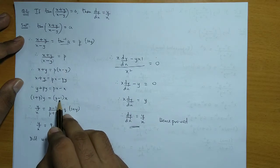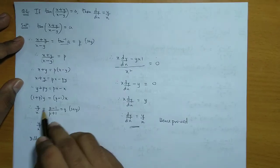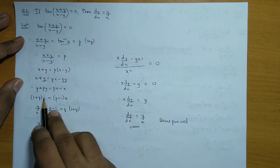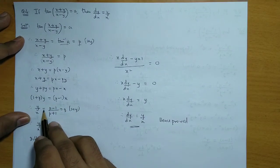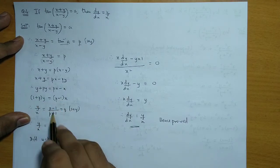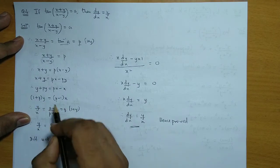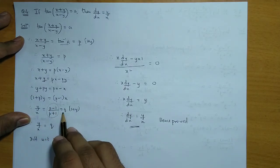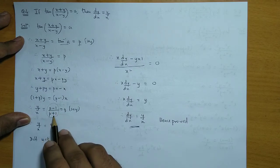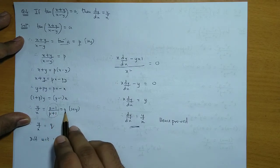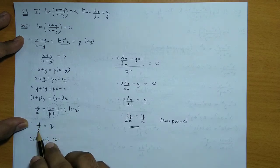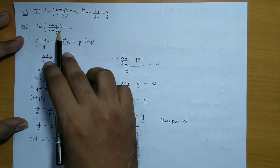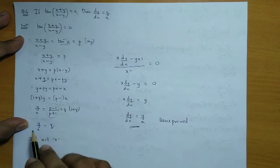Next we collect the p terms on one side and the x and y terms on the other side. Finally we get y/x = (p-1)/(p+1). Now this is also a constant, so let's call it q. So (p-1)/(p+1) = q. Therefore we get y/x = q. So this complicated equation has been completely simplified to y/x = q.